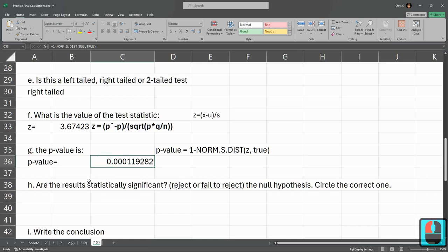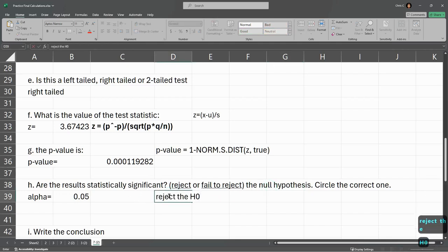And remember on these, if your P value is less than alpha, I'll write down alpha here. Alpha is 0.05. When your P value is less than alpha, you reject the null hypothesis. So I reject the H0, the null hypothesis, because P value is less than or equal to alpha. It's rarely going to equal alpha. But if it's less than alpha, you reject H0.